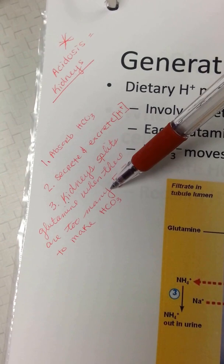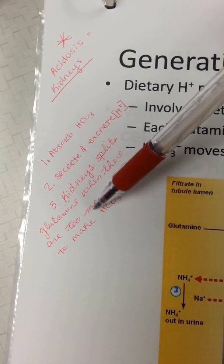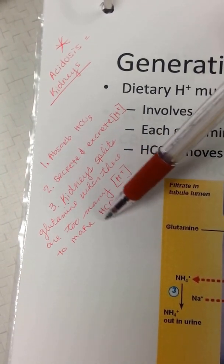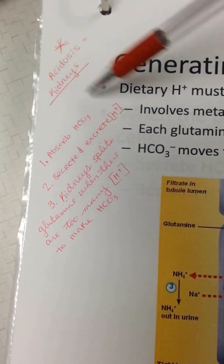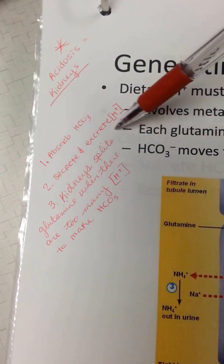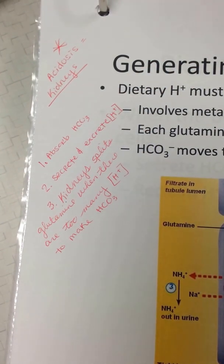When there are too many hydrogen, kidneys split the glutamine to make two bicarbonate, or they can absorb bicarbonate or they can excrete hydrogen.